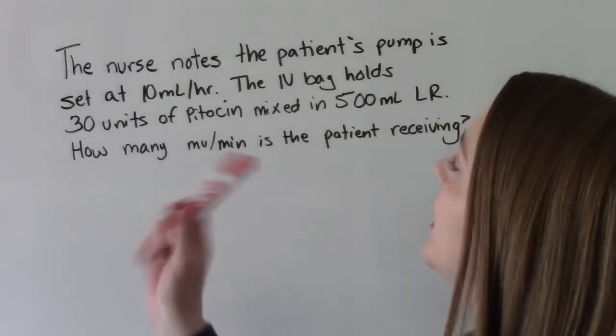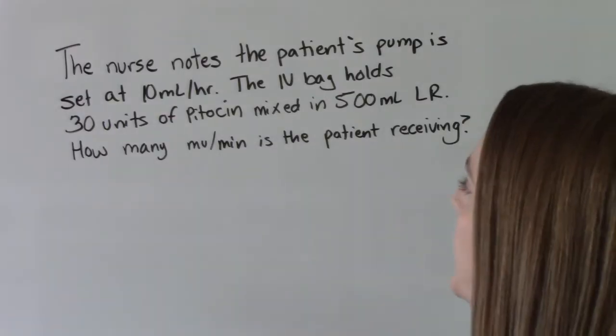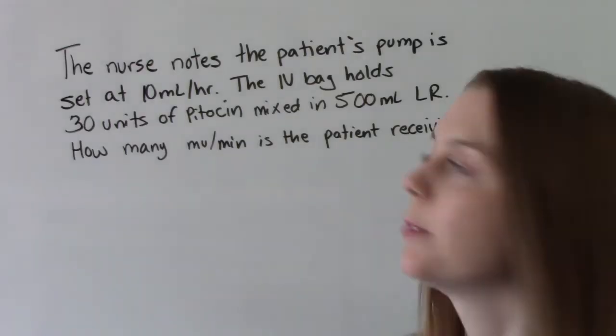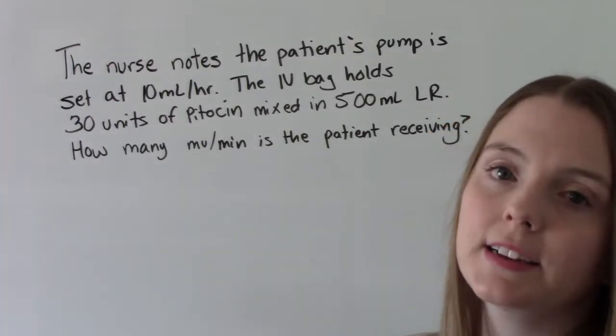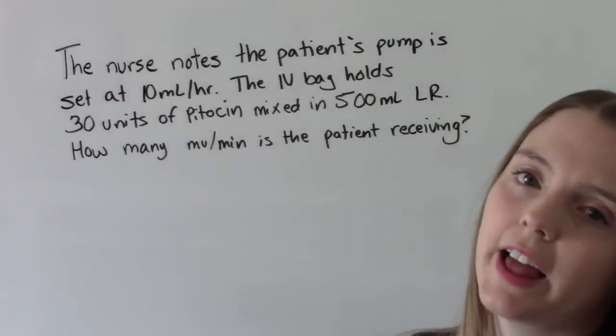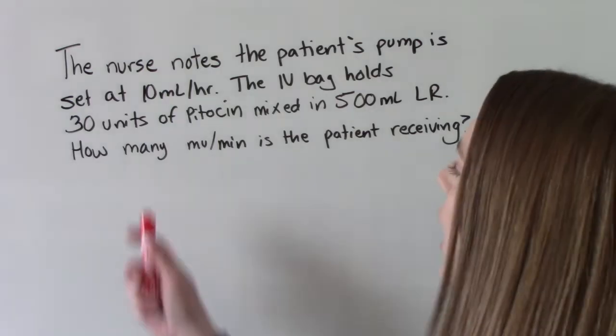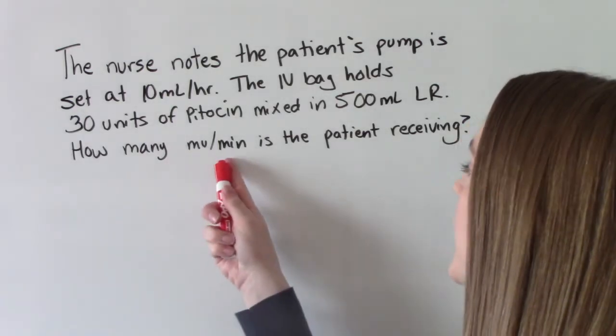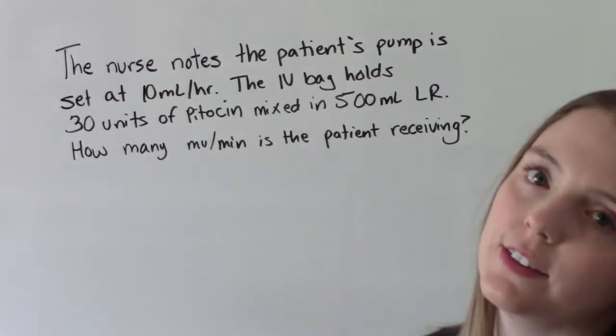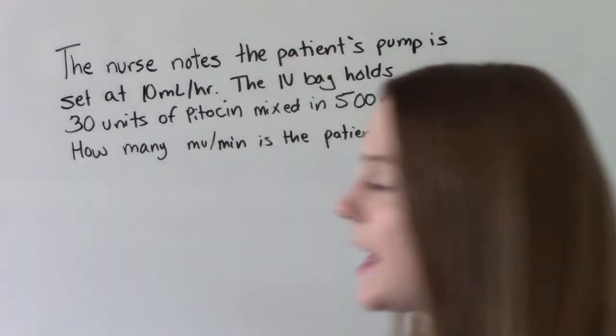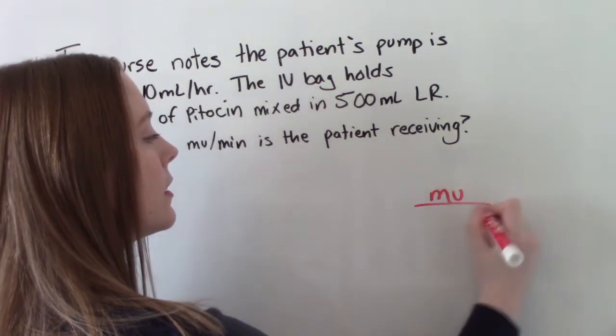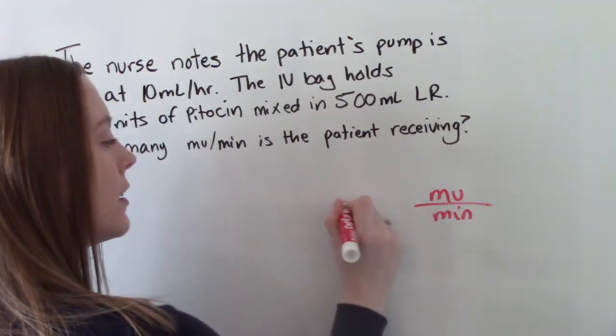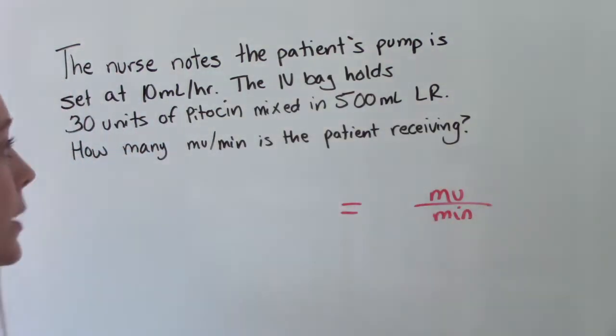This next one. The nurse notes the patient's pump is set at 10 mLs per hour. The IV bag holds 30 units of Pitocin mixed in 500 mLs of lactated ringers. How many milli units per minute is the patient receiving? So that's what we're looking for.